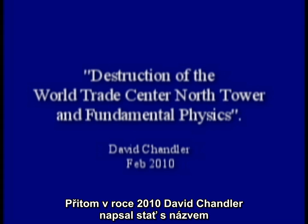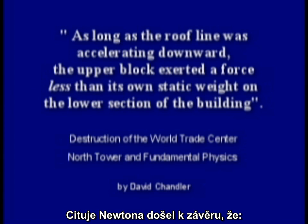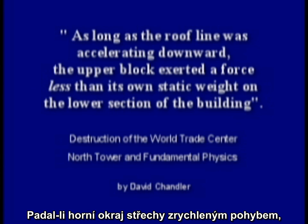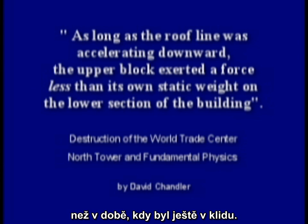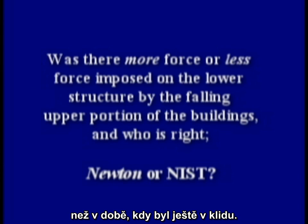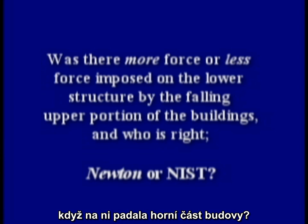But in 2010, David Chandler wrote a paper called 'Destruction of the World Trade Center North Tower and Fundamental Physics.' Citing Newton's laws, he concluded: as long as the roof line was accelerating downward, the upper block exerted a force less than its own static weight on the lower section of the building. So was there more force or less force imposed on the lower structure by the falling upper portion of the buildings, and who is right?